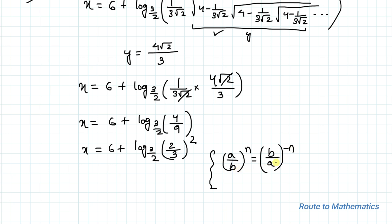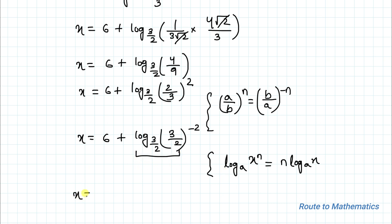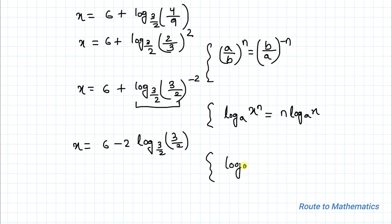Applying this exponential law, we get x = 6 plus log base 3/2 of (3/2)^(−2). Now applying the logarithm power rule — log base a of x^n equals n·log base a of x — we get x = 6 minus 2·log base 3/2 of (3/2). Since log base a of a equals 1, we have log base 3/2 of 3/2 = 1. Therefore x = 6 − 2 = 4. The value of the given expression is 4.